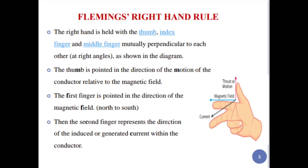Fleming's right-hand rule uses three fingers: the thumb, the index finger (first finger), and the middle finger (second finger). These three fingers are mutually perpendicular to each other, as shown in the diagram. The thumb is pointed in the direction of the motion of the conductor relative to the magnetic field.